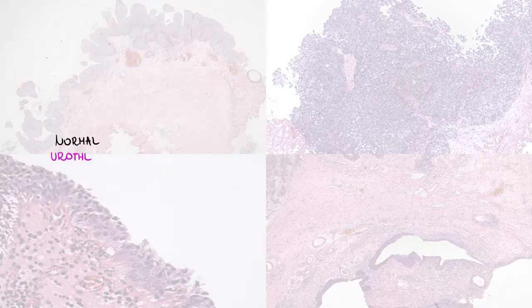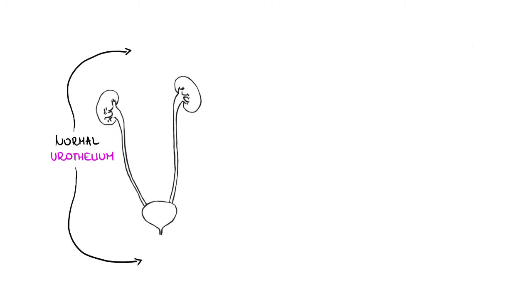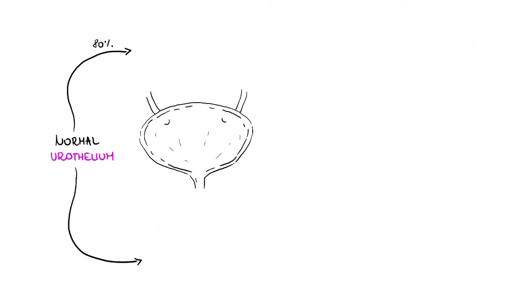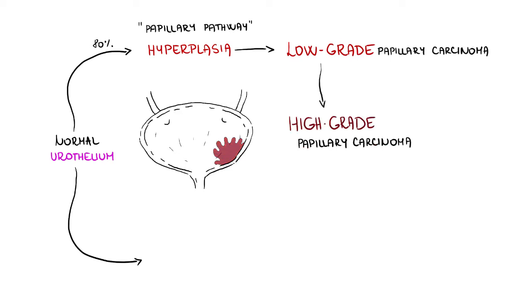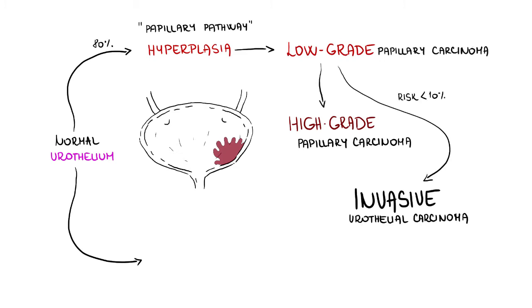There are two major distinctive pathways by which precursor urothelial lesions progress to invasive urothelial carcinoma. The common precursor of approximately 80% of invasive carcinomas is papillary urothelial hyperplasia. The papillary hyperplasia progresses to low-grade and high-grade non-invasive papillary carcinomas. Low-grade tumors frequently recur, but the risk of invasive growth is below 10%. In contrast, high-grade urothelial carcinomas are more aggressive, with a higher risk of invasive growth.